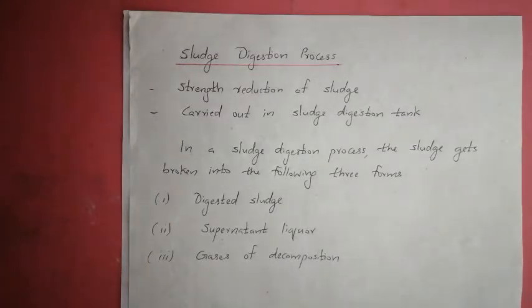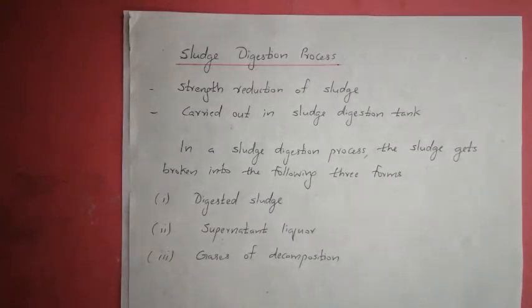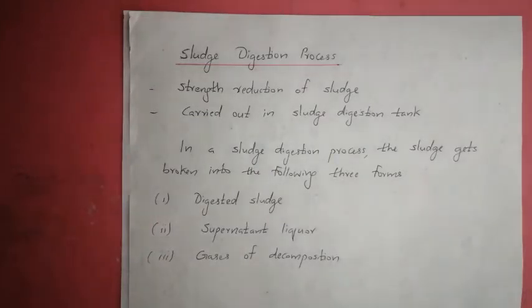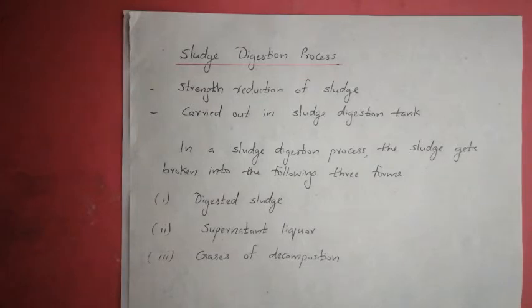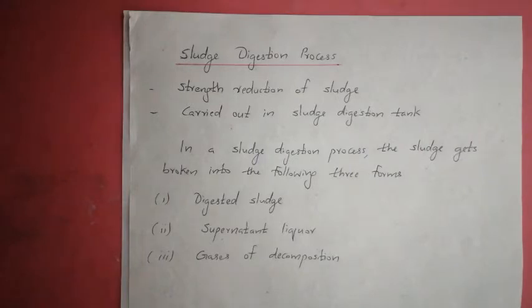Digested sludge has reduced moisture content, so obviously the volume is reduced — almost one-third compared to undigested sludge volume. The next product is supernatant liquor, which is a liquefied and finely divided solid matter.